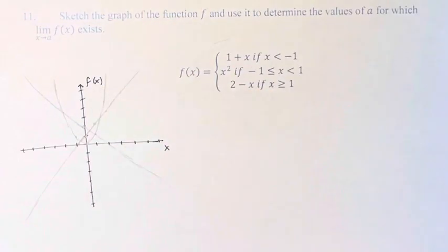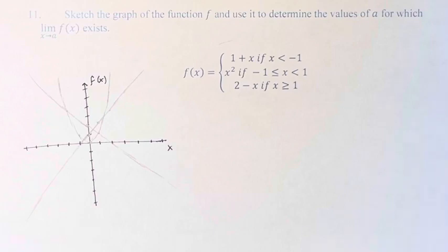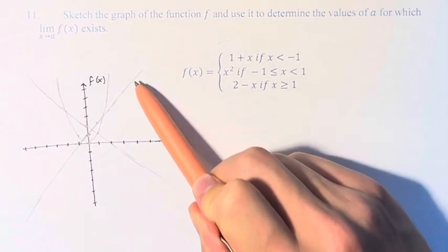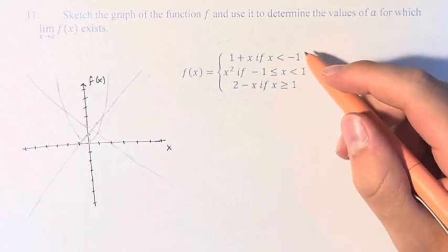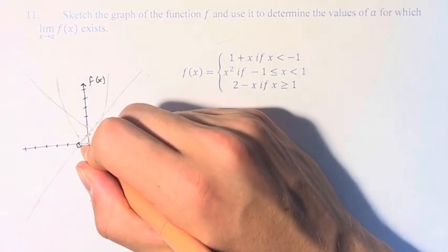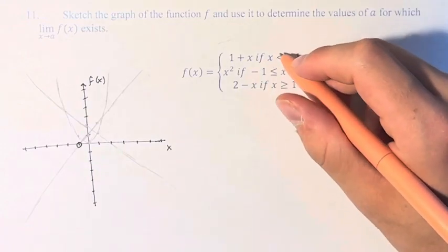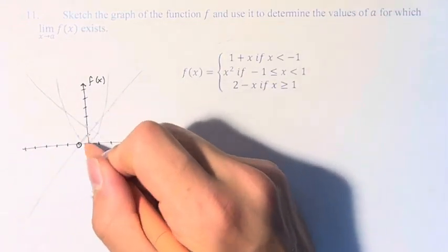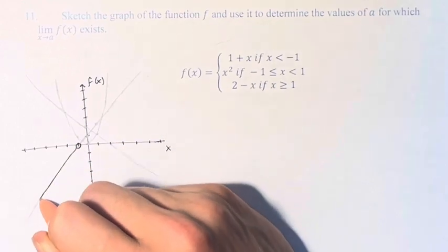So now we have these three functions, and we have to restrict them to their respective domains. This is 1 plus x, and this is applicable when x is less than negative 1. So x is equal to negative 1 here. So we draw an open circle because it's not less than or equal. And for all values to the left, less than negative 1, this is what the function is.